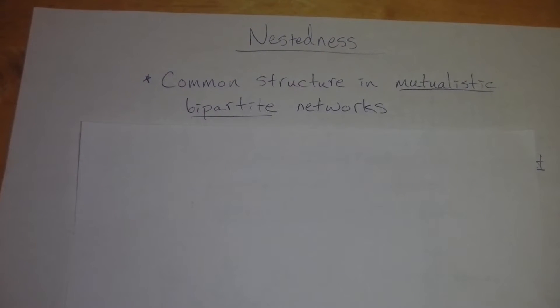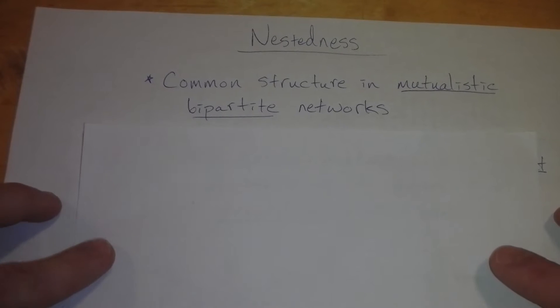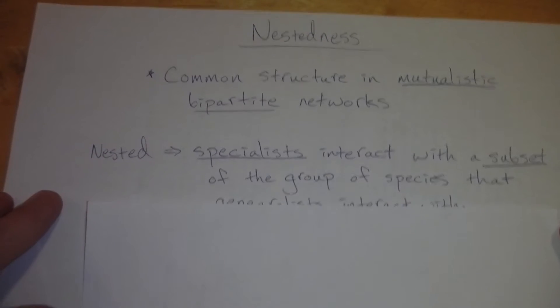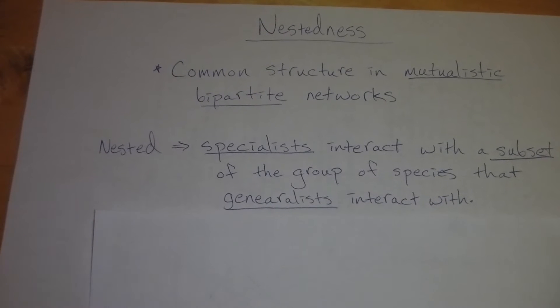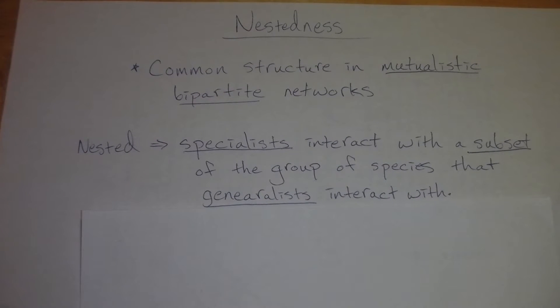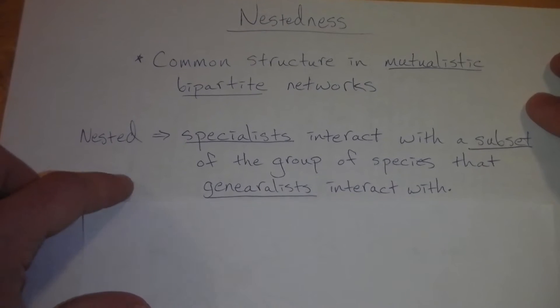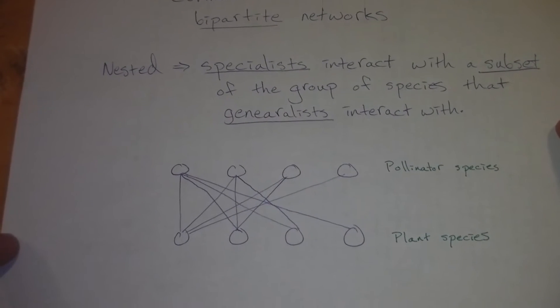So when I'm talking about a mutualistic bipartite network, an example of that could be a plant-pollinator network or a plant seed disperser network. So what actually is nestedness? A good verbal definition to go by is that a network is nested if the specialists, for example specialist species, interact with a subset of the group of species that generalists interact with. So that may sound a bit convoluted, but here's an example.